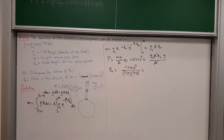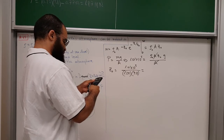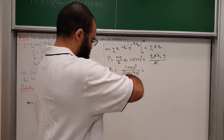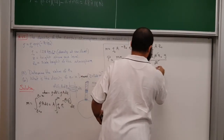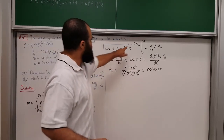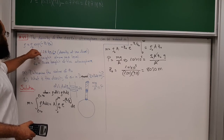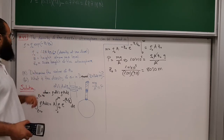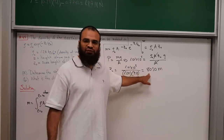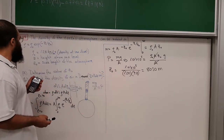At z = z₀, the density is ρ₀/e, meaning it has dropped by one factor of e ≈ 2.7. You can think of z₀ as indicating the effective height of the atmosphere — at roughly 2–3 times z₀ the density becomes negligible and there is essentially no air.